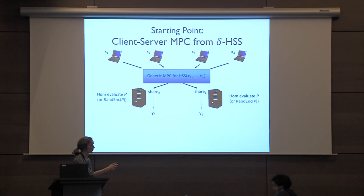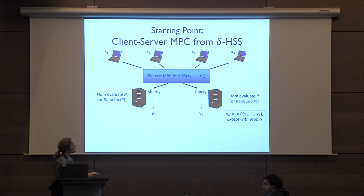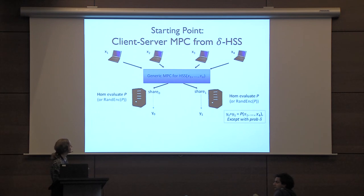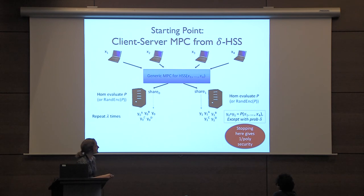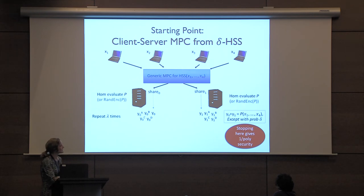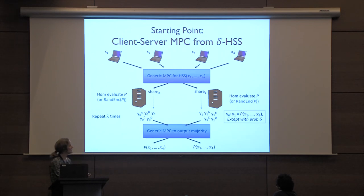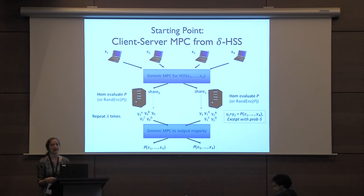After homomorphic evaluation, recall that aside from error parameter Delta, the shares add to the correct output. We can handle correctness by iterating multiple times. However, simply exchanging shares creates a security issue: some shares have errors, and the errors are dependent on the inputs — specifically, an error occurs if a red special point falls between the two shares, which is a function of the intermediate computation value.